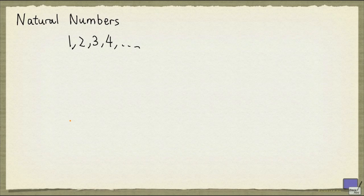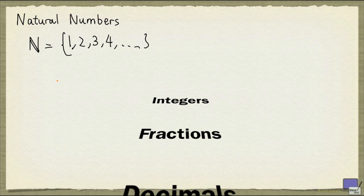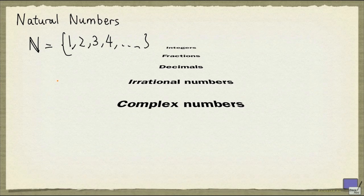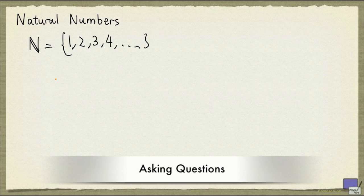The natural numbers, also known as the counting numbers, are the numbers 1, 2, 3 and up. Normally the set of natural numbers is denoted by a funny-looking capital N. Most of us learn about the natural numbers very early on. As we progress through school, we learn about the integers, fractions and decimals, irrational numbers, and eventually complex numbers. The progression from the natural numbers to the complex numbers can actually be described in a unifying manner, and in this video we're going to take a glimpse into this progression by repeatedly asking a similar question.